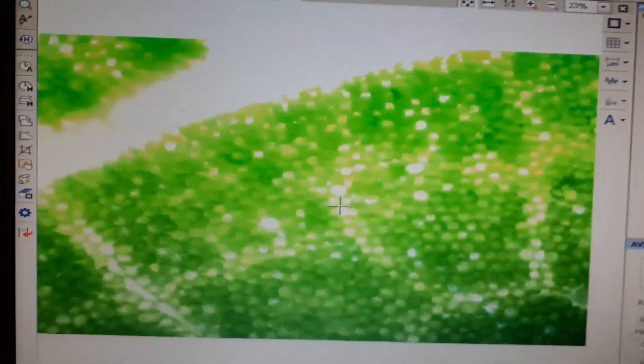Can you see the small hexagonal things? Those are the plant cells. You see that? Wow.